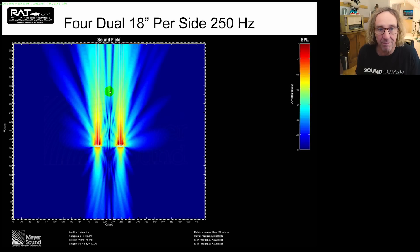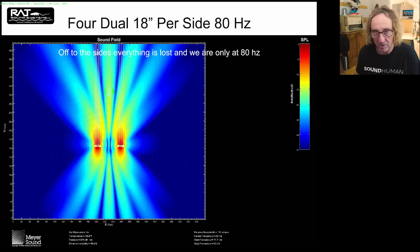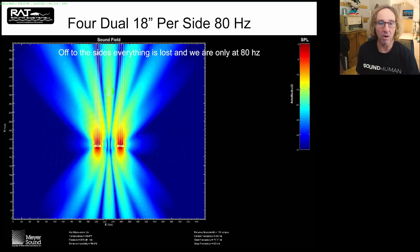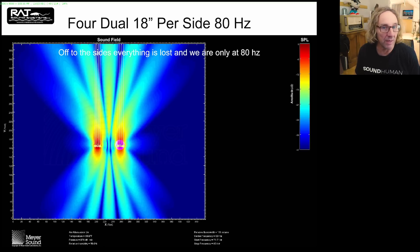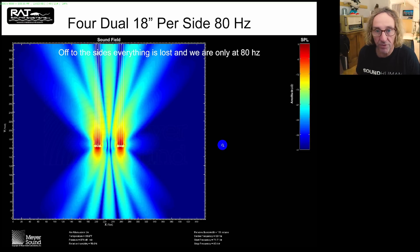At 50 Hz we really start to lose sound off to the side. This is a very common sub problem I see for arenas and festivals where wide arrays on either side — even just four subs per side — really diminish the low end for audience members out wide. Roughly one-third of the people are getting relatively good sound and two-thirds are not. In an arena it's even worse because you have people spread out even further. Having these wide sub arrays on the ground can be fairly detrimental.